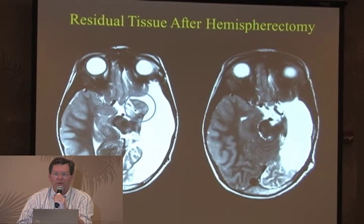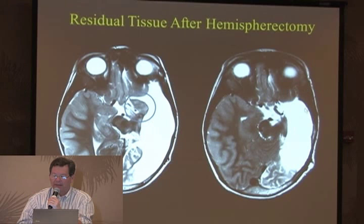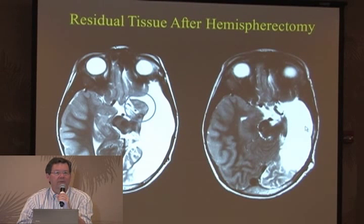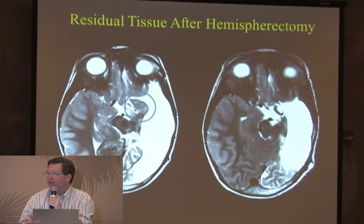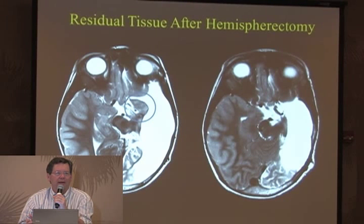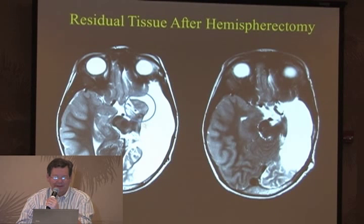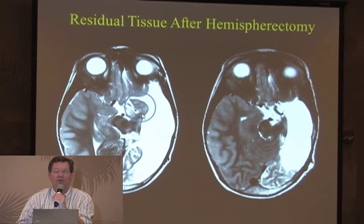We went back and I took out that little extra bit - no more than two centimeters by about a centimeter and a half. That was enough to make this person seizure-free. Pathology confirmed a very severe cortical dysplasia. The only connection was that small connection, and that's all it took.